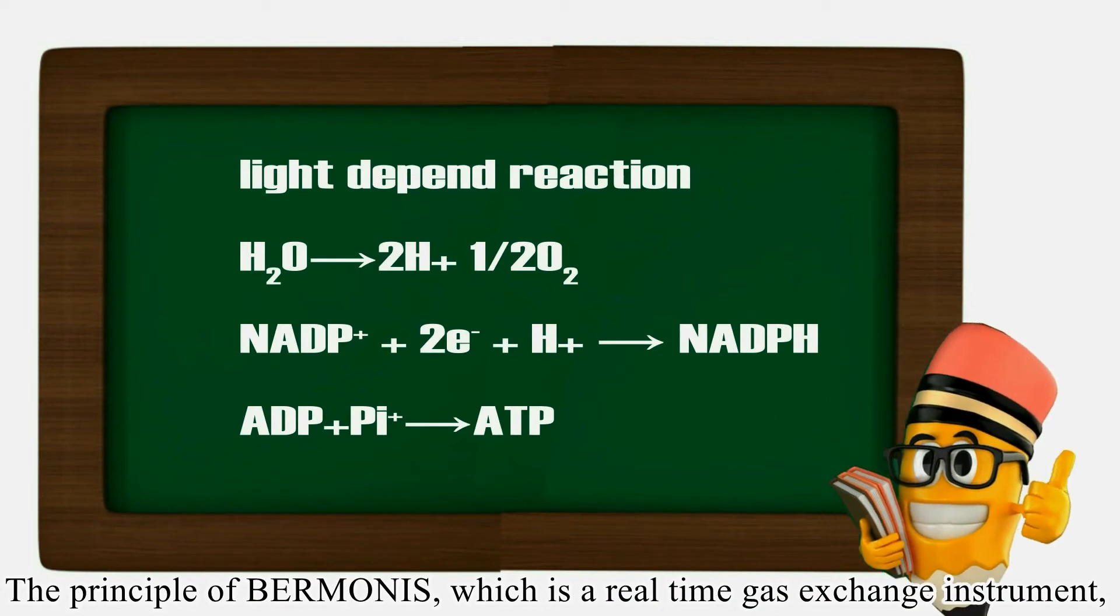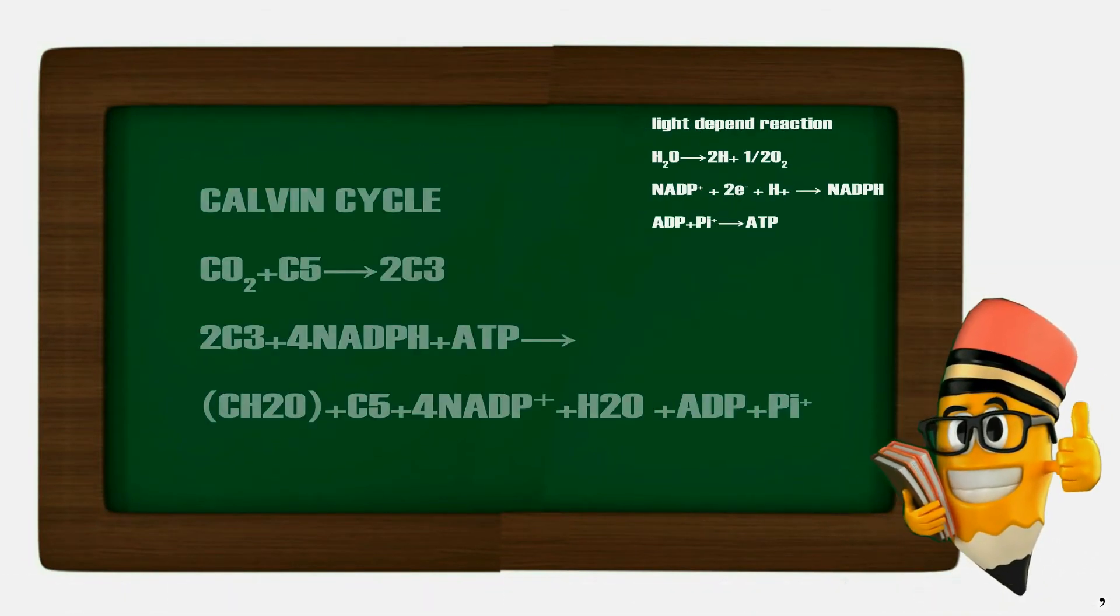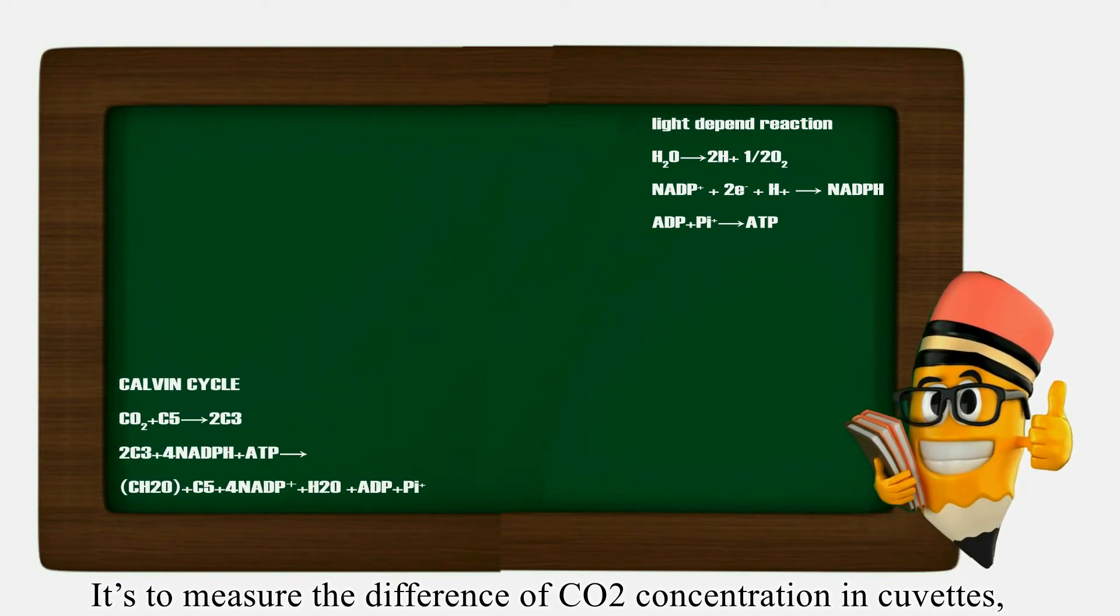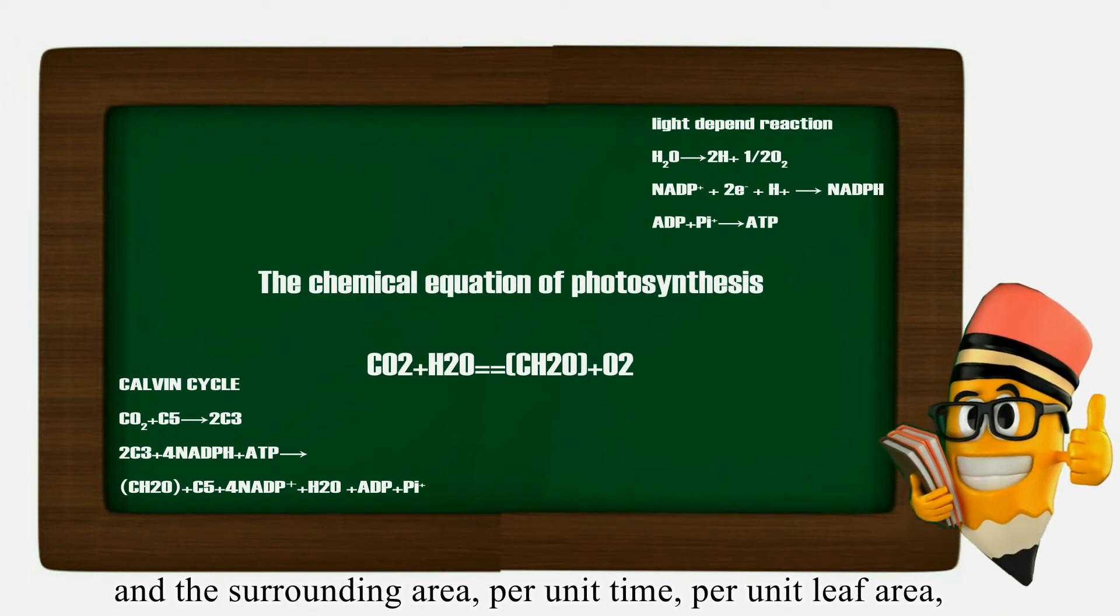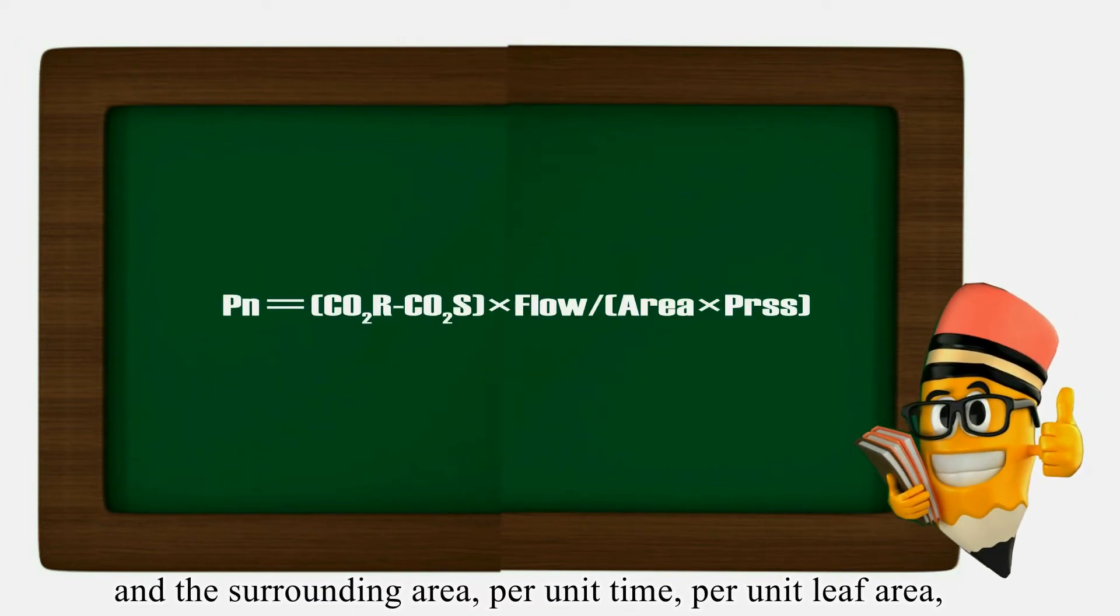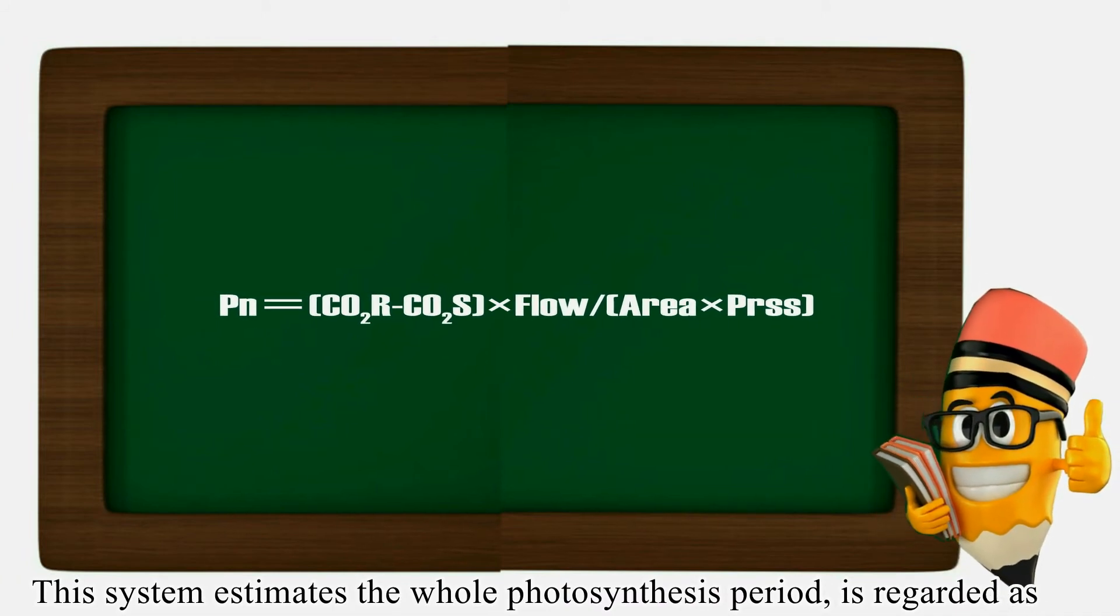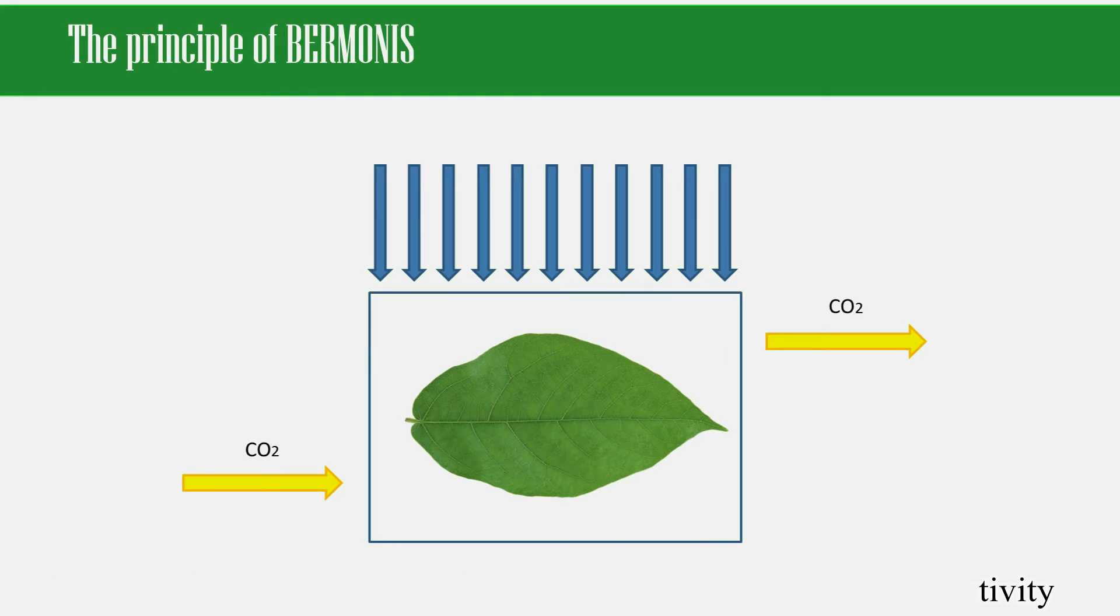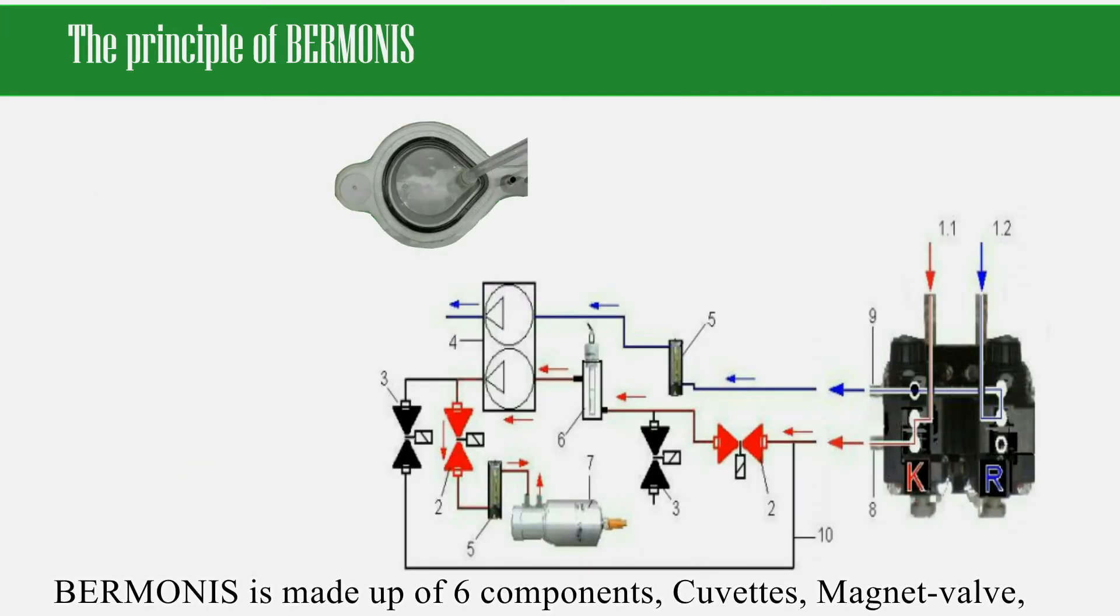The principle of BERMONIS, which is a real-time gas exchange instrument, is to measure the difference of CO2 concentration in the cuvette under the surrounding area per unit time per unit leaf area. This system estimates the whole photosynthesis period and is regarded as a standard method indicating the maximum photosynthetic activity of leaves under the measurement environment conditions.